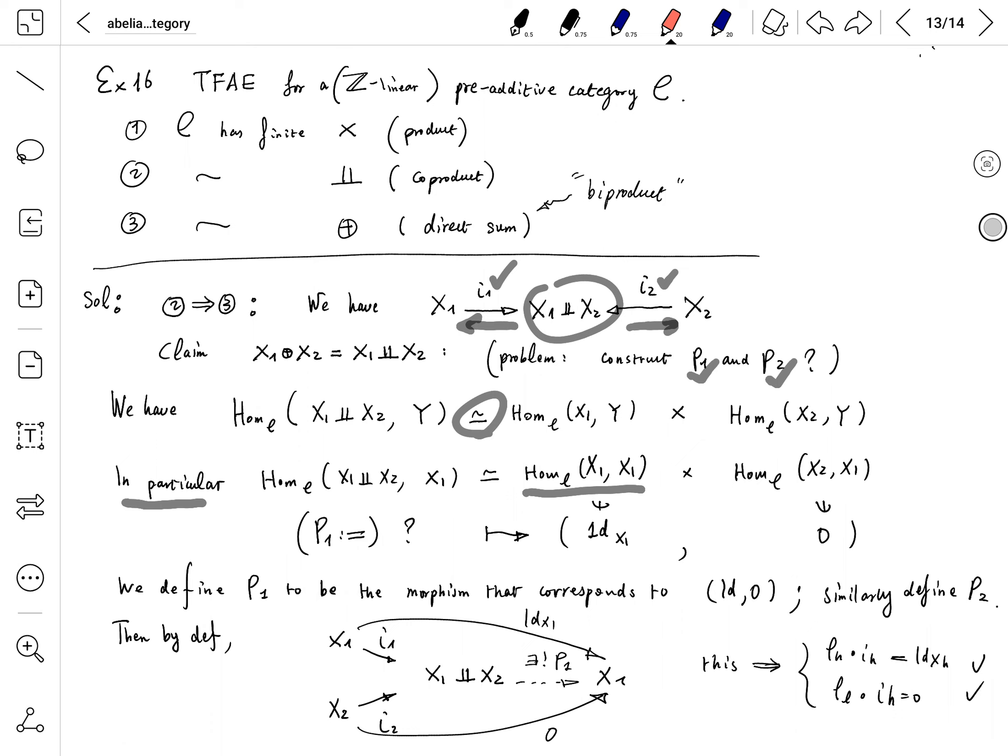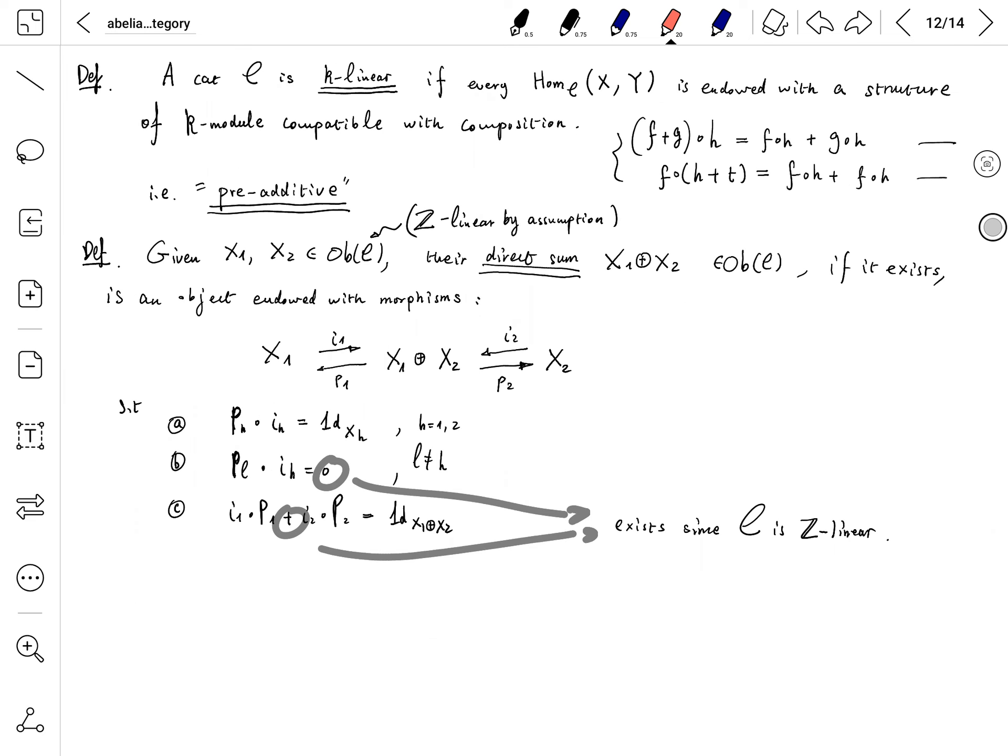If you translate this into a diagram, this is exactly the same. There exists a unique map from coproduct to X1 such that it makes the diagram commute. The first part, X1 to X1, we got identity. X2 to X1, we got zero. And the existence of this morphism, which we call P1, is exactly telling us the first two conditions of being a direct sum are satisfied.